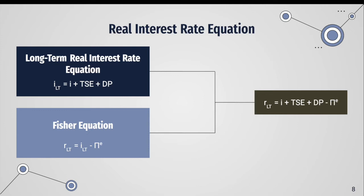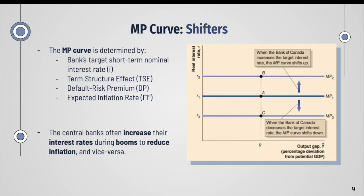To further illustrate, we consider the link between the long-term nominal and real interest rates as given by the Fisher equation: the expected real interest rate equals the nominal interest rate minus the expected inflation rate. Combining this with the long-term real interest rate equation, the final equation for the real interest rate is: the short-term nominal interest rate plus the term structure effect (TSE) plus the term premium (TP) minus the expected inflation rate.